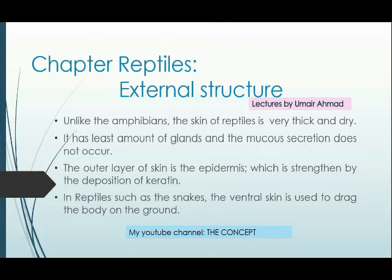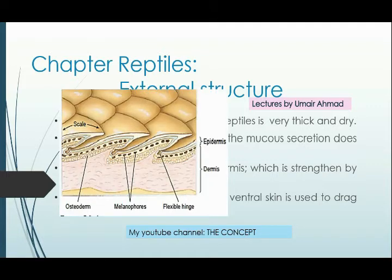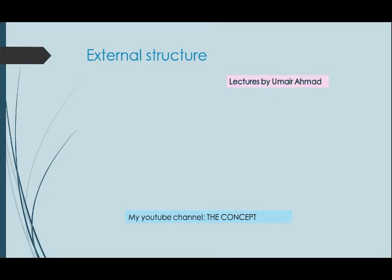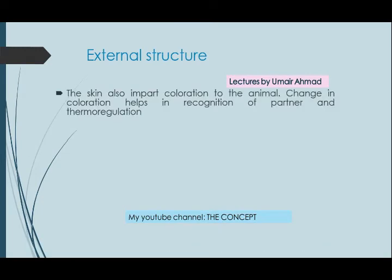Skin کو strength ملتی ہے keratin protein سے۔ Reptiles جیسے کہ snakes میں ventral skin کافی زیادہ solid ہوتی ہے اور ground friction کے ساتھ زخمی نہیں ہوتی۔ اس figure میں دکھائے گئے scales کو epidermal scales کہتے ہیں جو کہ زیادہ تر snakes میں present ہوتے ہیں۔ Reptiles کی skin مختلف colors کی ہوتی ہے اور skin کی pigmentation chromatophores کی وجہ سے ہوتی ہے۔